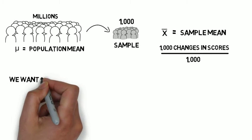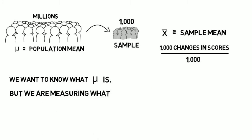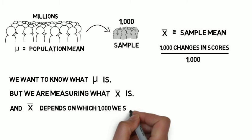What we want to find out is what the population mean is of the millions of students. What we're measuring is x-bar, the sample mean of 1,000 students. And it depends on which 1,000 students we sample, of course.